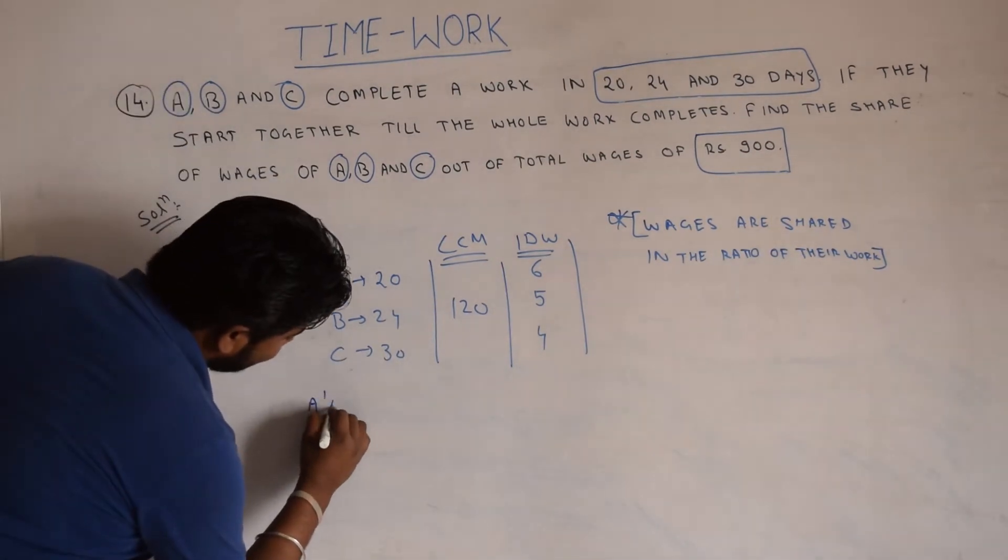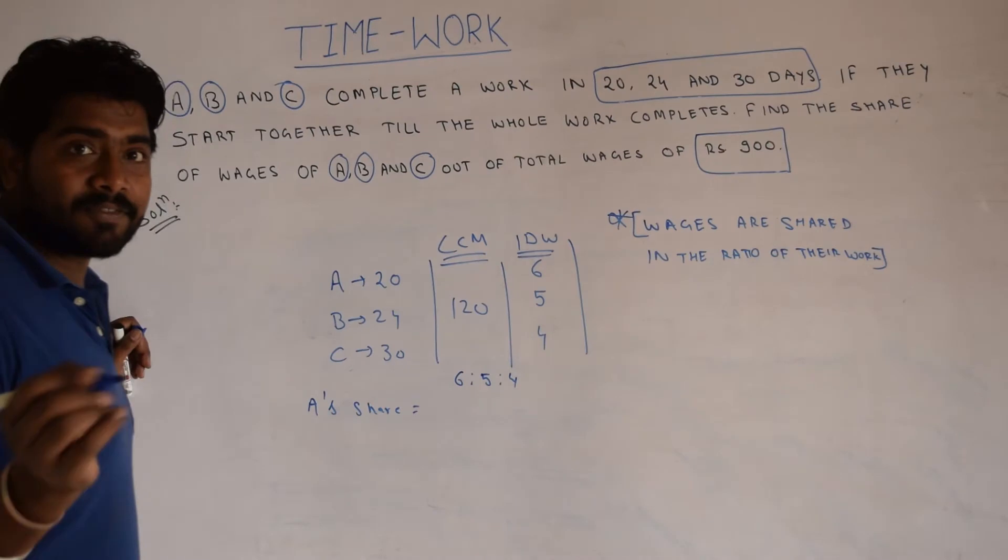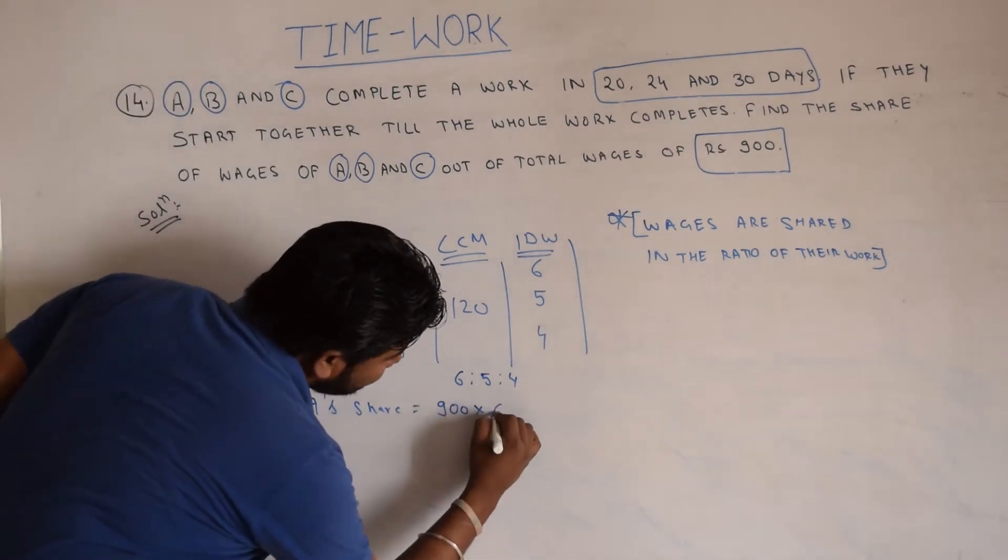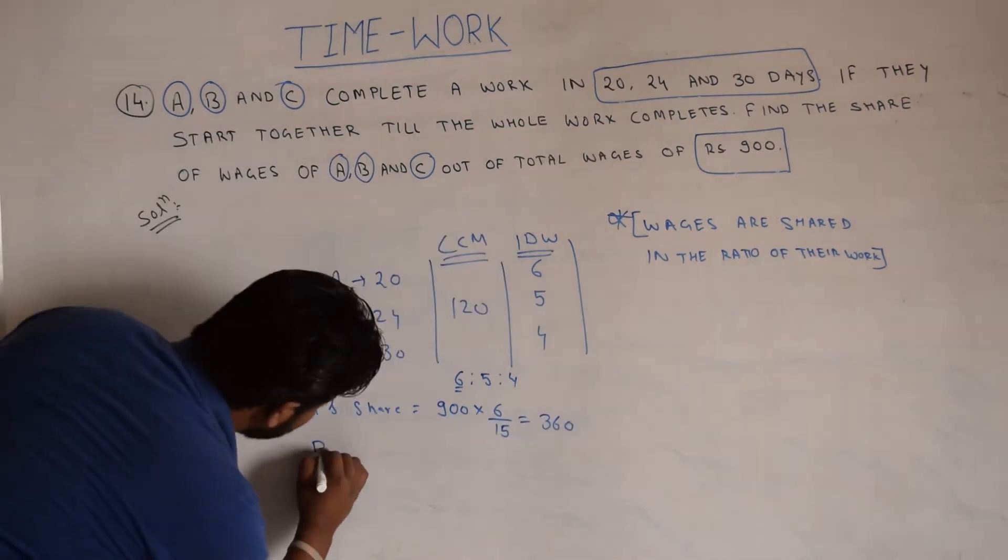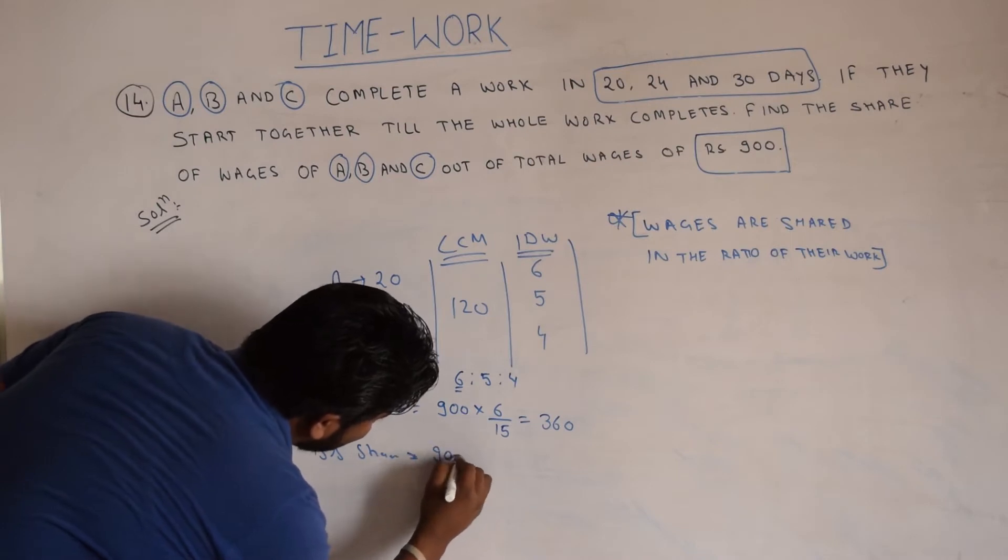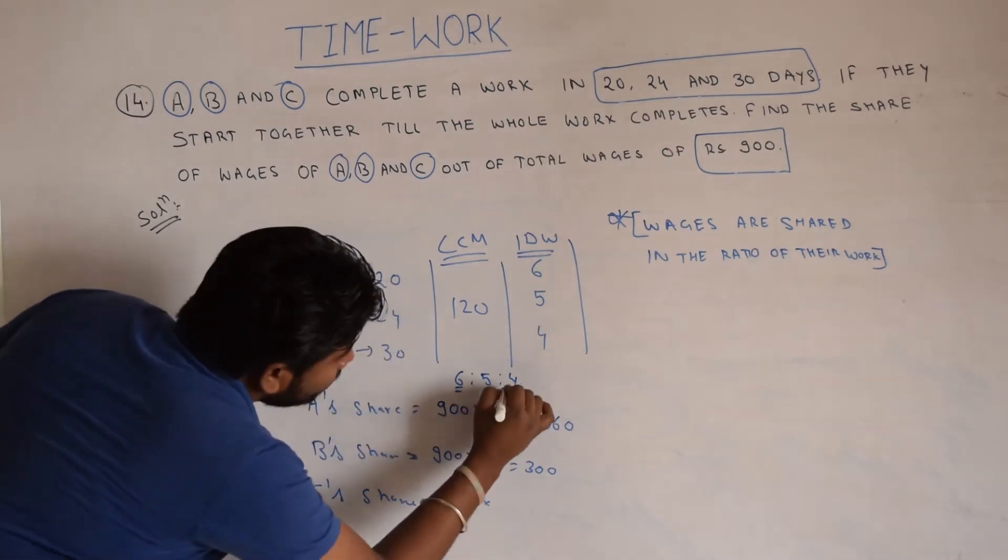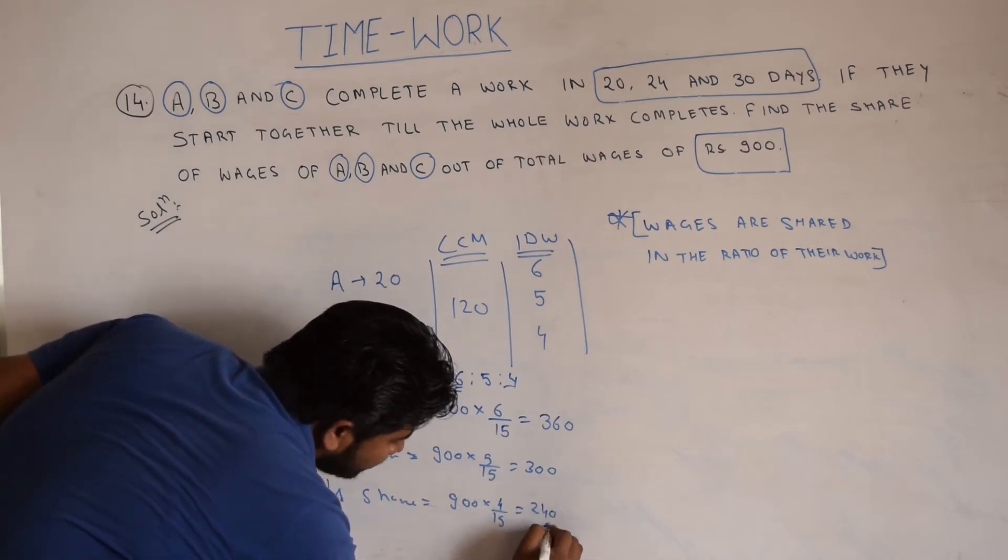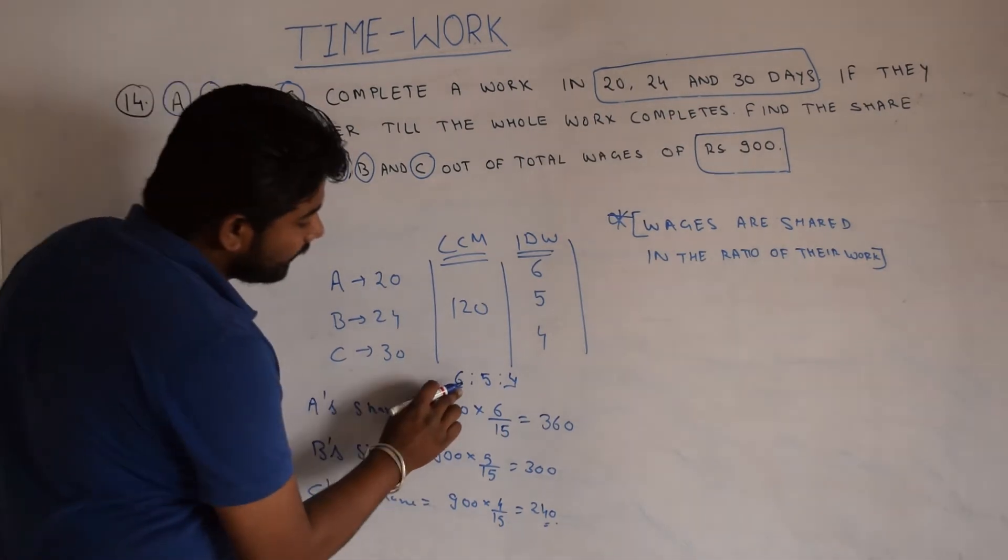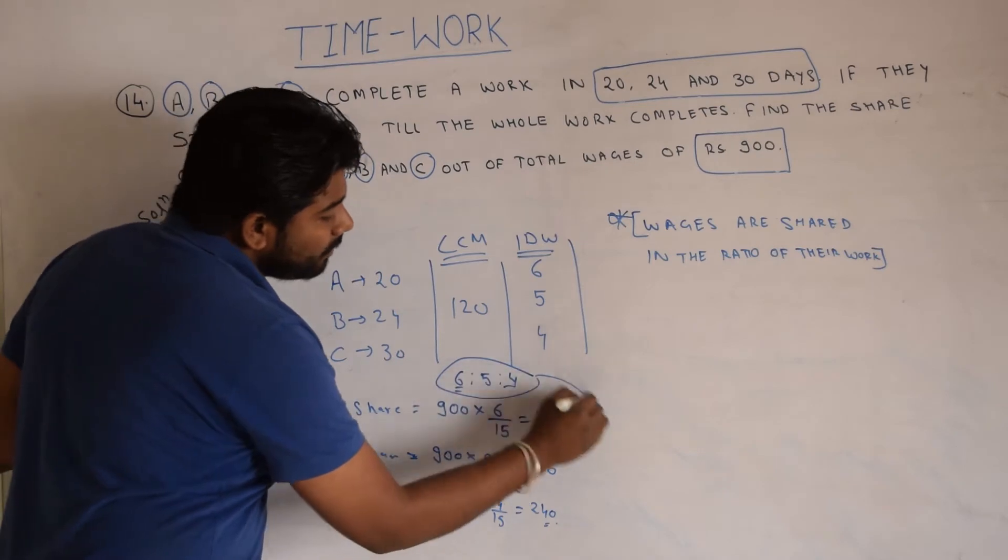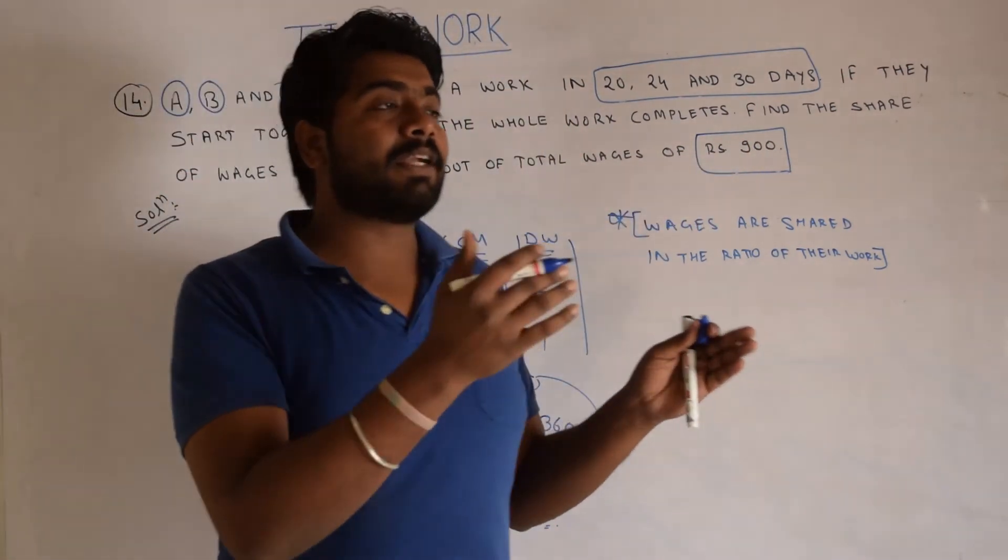Now, A's profit is shared. A's share, upon total units, that is 6 by 15 into 900 equals 360. B's share is 5 by 15, C's share is 4 by 15, where 6 plus 5 plus 4 equals 15 is the sum. This thing will be much more clearer if you watch my video of ratio and proportions where I will be discussing how to segregate value in different ratios and proportions.